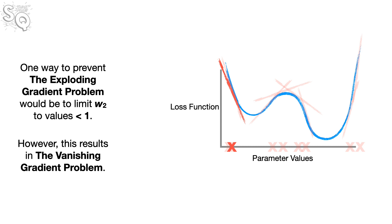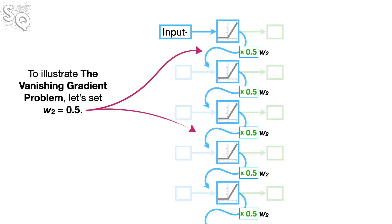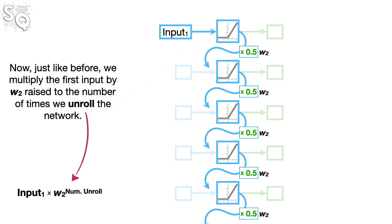One way to prevent the exploding gradient problem would be to limit W sub 2 to values less than 1. However, this results in the vanishing gradient problem. Hey wait, where'd the gradient go? To illustrate the vanishing gradient problem, let's set W sub 2 to 0.5.